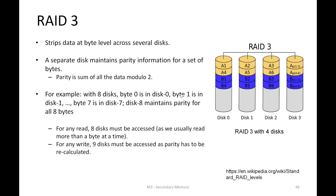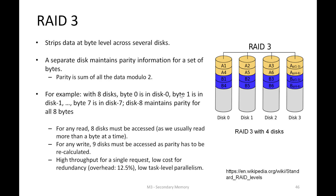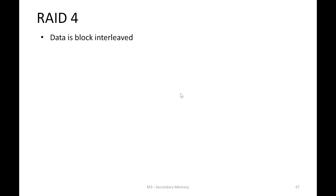On writes in RAID3, if we want to write new data, we need to read all 8 disks, recalculate the parity, and write it to the last disk. While latency is good for a single large request due to parallelism, multiple such requests must be processed in sequence. RAID4 develops on RAID3 and proposes striping data at block level, so that a request for one block can access a single disk, allowing other disks to serve parallel requests and increasing throughput.